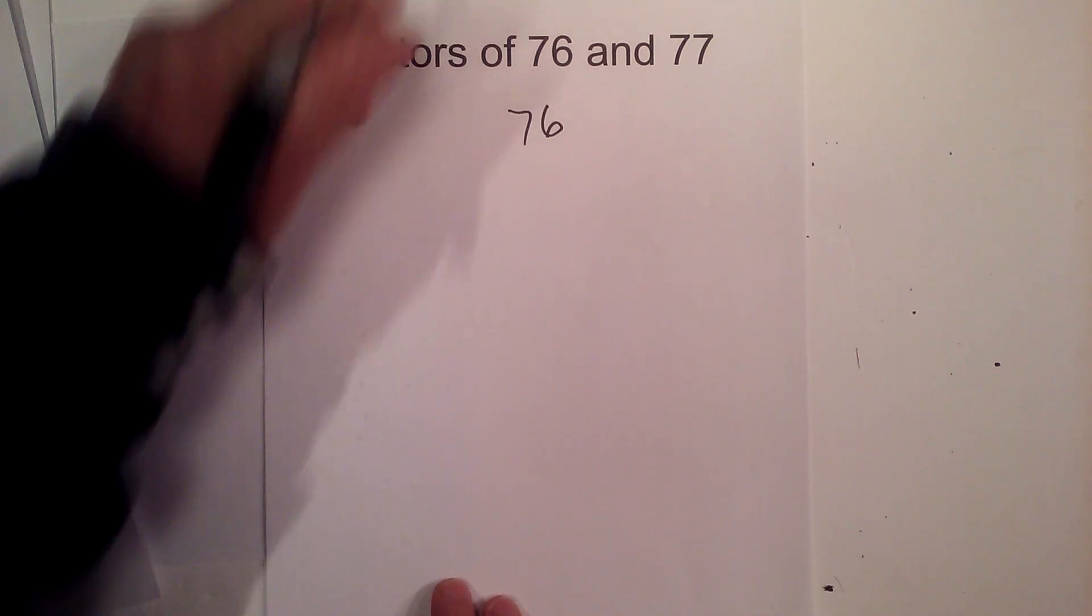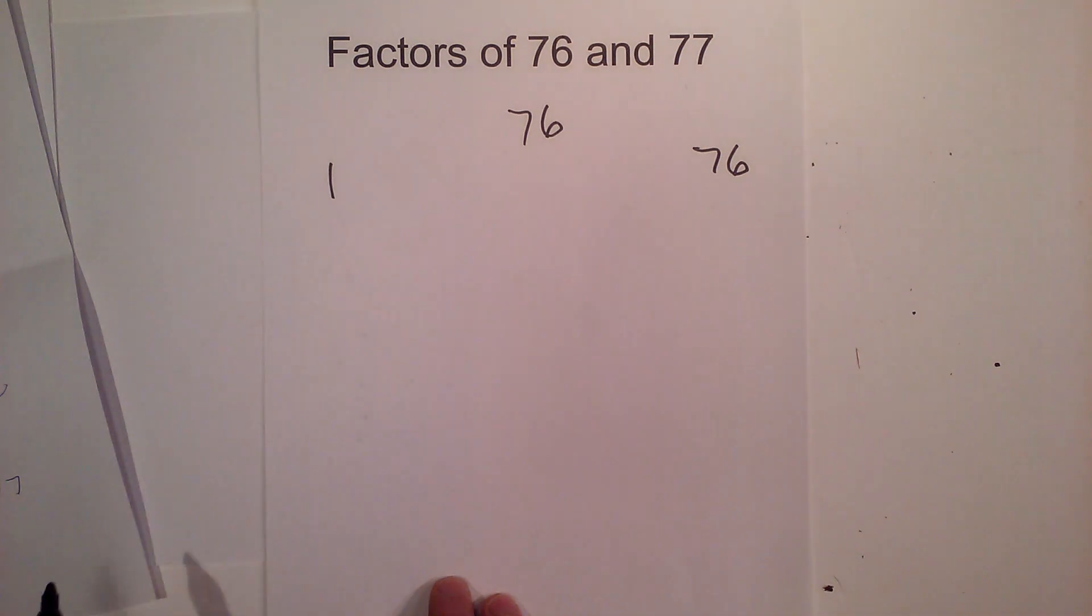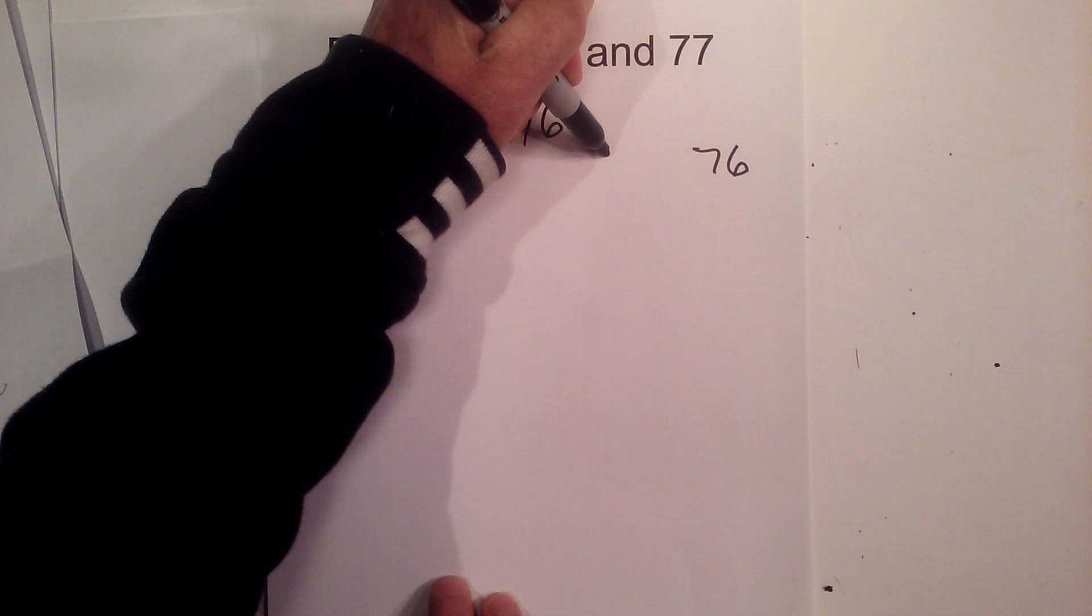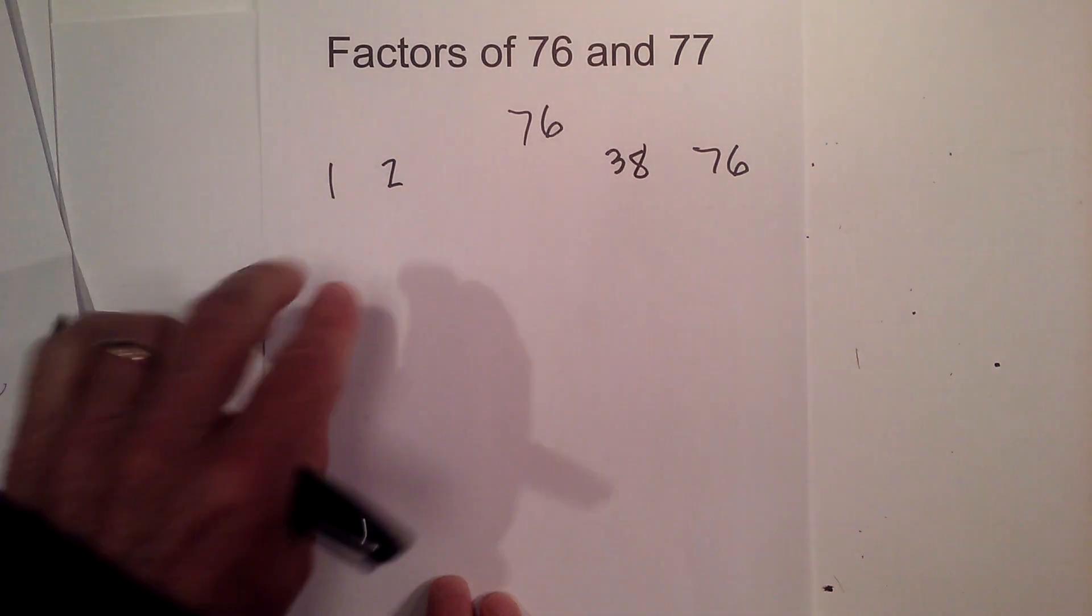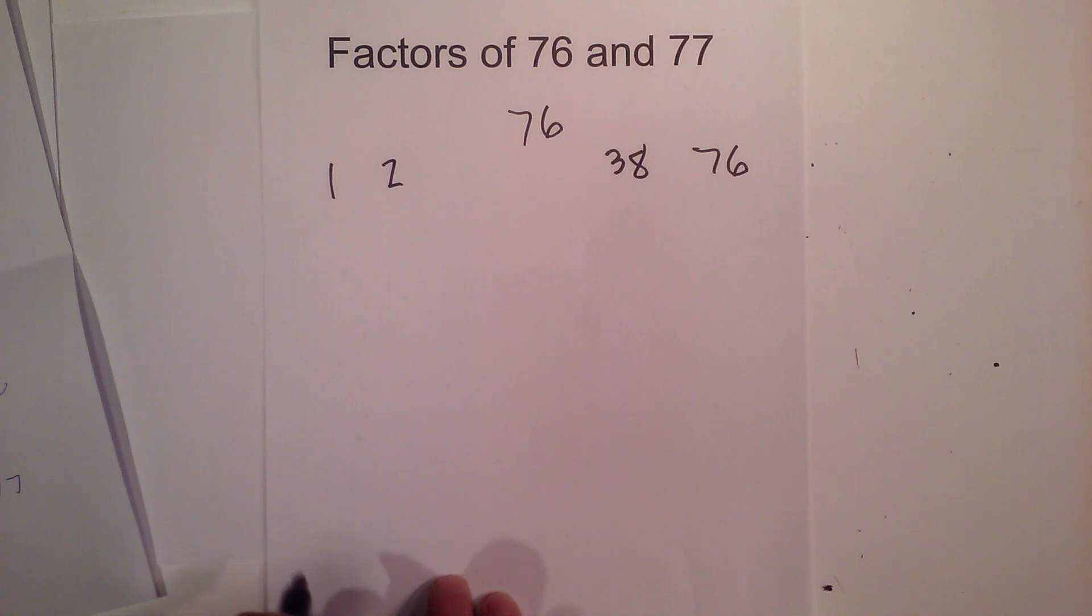I'll start with 76. 1 times 76 equals 76, obviously. And then we have 2 times 38. And I'm trying to find all the factors in between these numbers that equal 76.